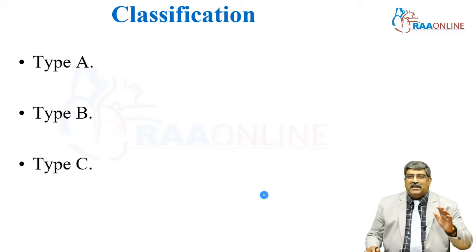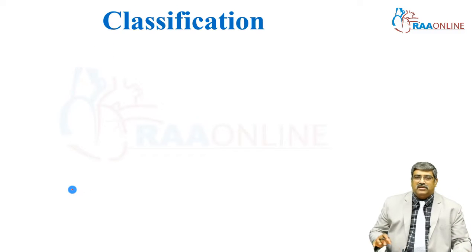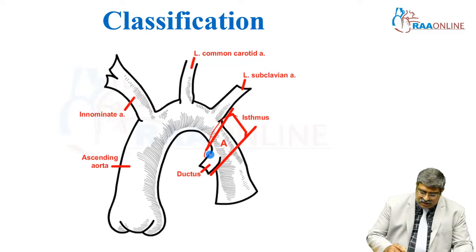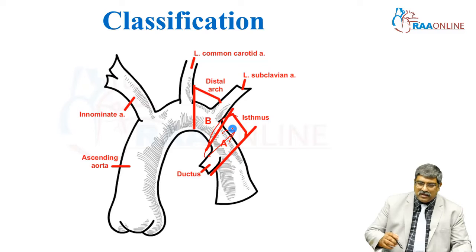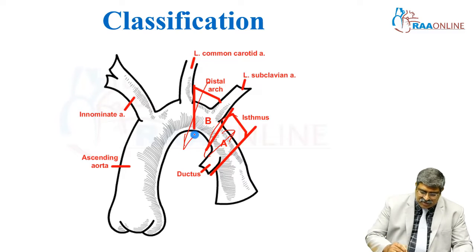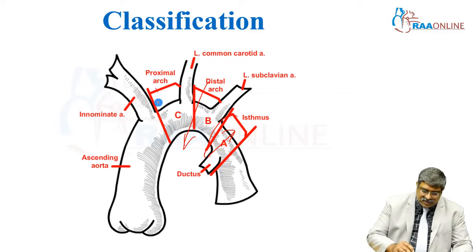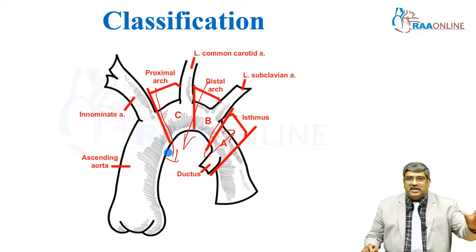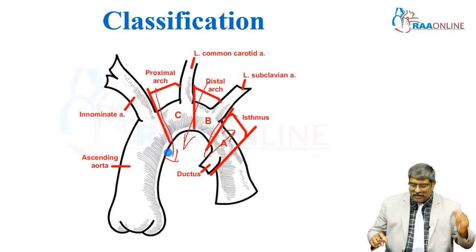Now, the classification of interrupted aortic arch is A, B, and C. In type A, the interruption is in the isthmus. In type B, the interruption is in the distal arch. And in type C, the interruption is in the proximal arch. So to summarize: type C is proximal arch, type B is distal arch, and type A is the isthmus.